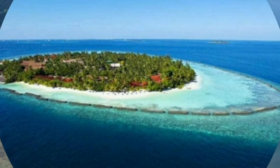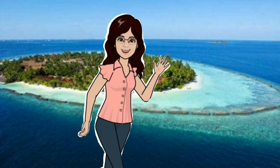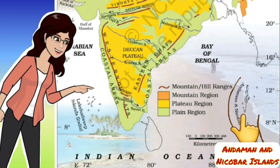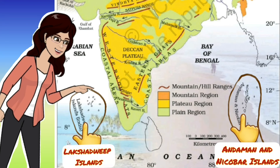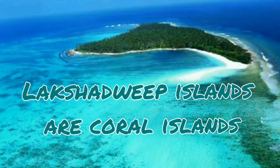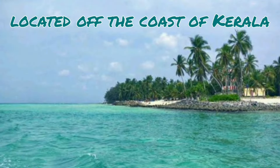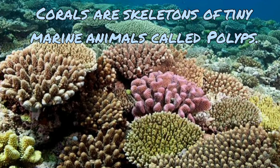India has two groups of islands. The first is the Andaman and Nicobar Islands, located in the Bay of Bengal. The second is the Lakshadweep Islands, located in the Arabian Sea. Lakshadweep Islands are coral islands, located off the coast of Kerala. Corals are skeletons of tiny marine animals called polyps.